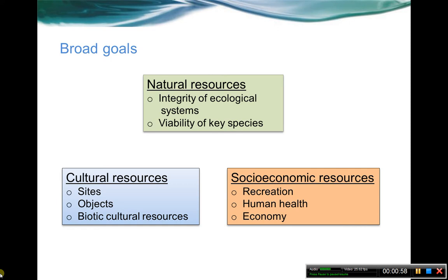A reminder about the broad goals of your cooperative — we've got the natural, the cultural, and the socioeconomic. For the Beaches and Dunes ecosystem, it's going to be focused on the natural resources. This is really all about the integrity of ecological systems. That's the key goal here and what these indicators should be adding up to. There's also a caveat that viability of certain key species may need to be revisited if integrity is not enough, but we're not at that point yet. So right now it's all about ecological integrity.